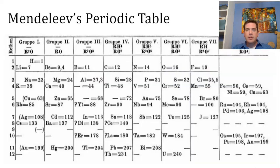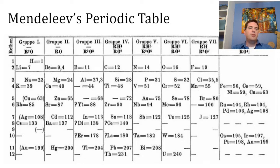He predicted the existence and properties of at least three elements: germanium, gallium, and scandium. So let me show you his table — or at least a typed version of it.